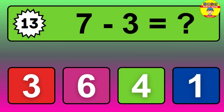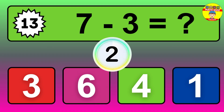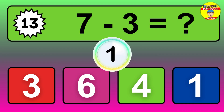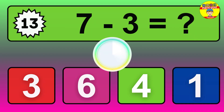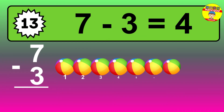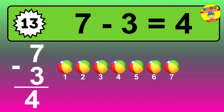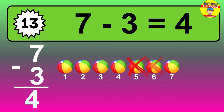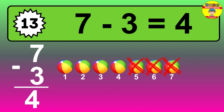Question 13. 7 minus 3 equals what? The answer is 7 minus 3 is 4. Let's count it: 1, 2, 3, 4.